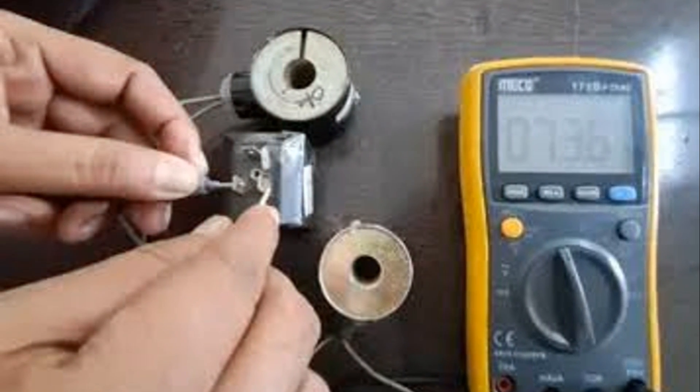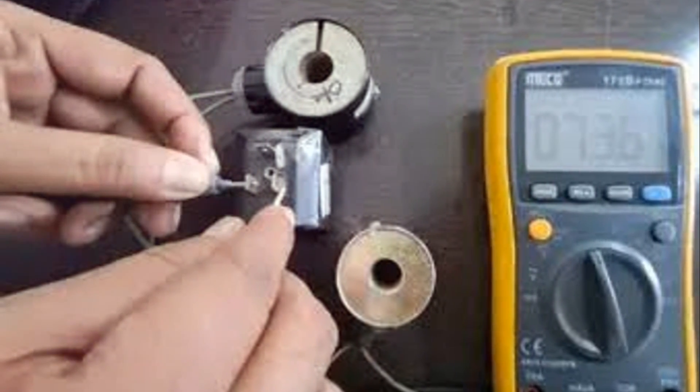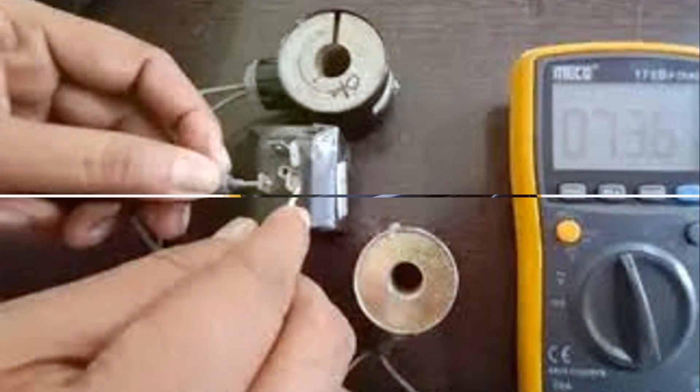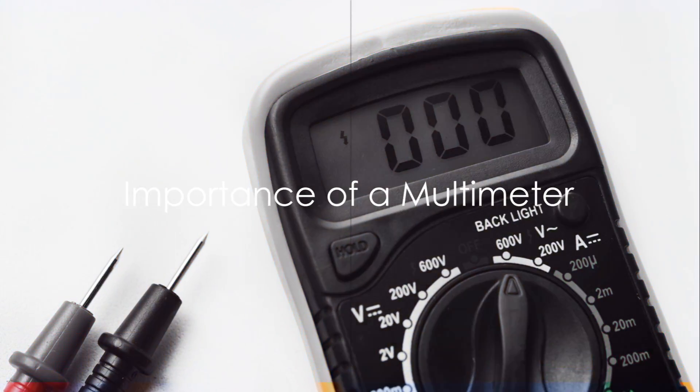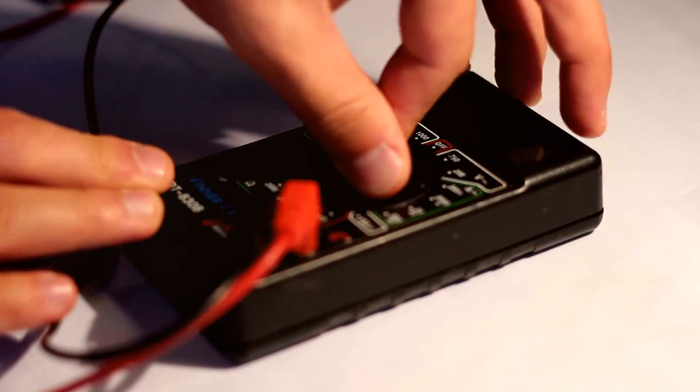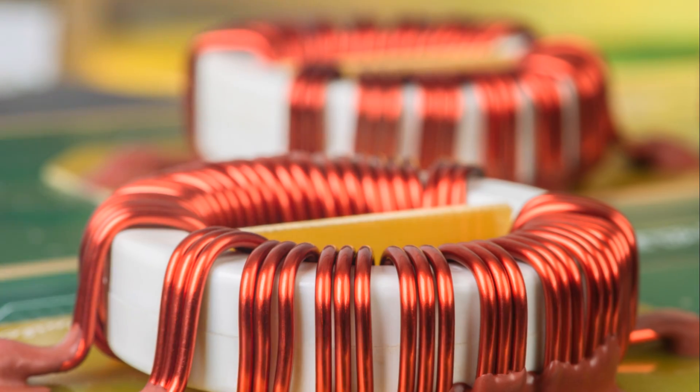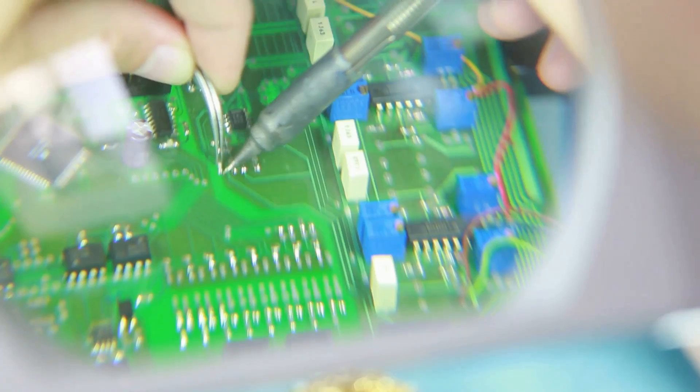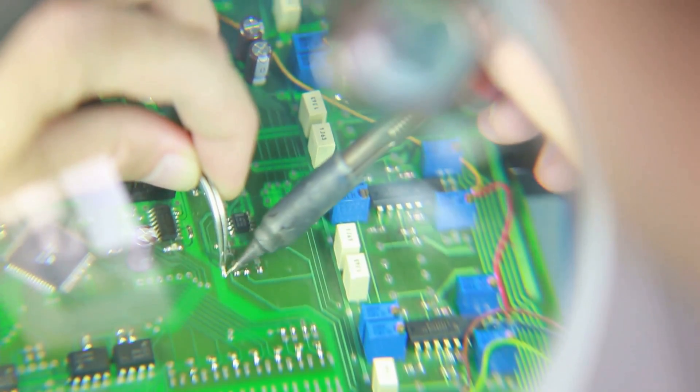But fear not, for the solution may be right at your fingertips. All you need is a trusty multimeter. A multimeter is a versatile tool that can help diagnose various electrical problems. When it comes to solenoid coils, it can prove to be an indispensable ally.